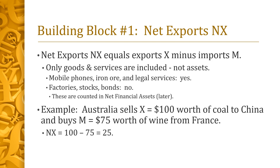To see how NX is computed, suppose Australia sells X equals $100 worth of coal to China, and buys M equals $75 worth of wine from France. NX then equals 25 — Australia's exports of 100 minus its imports of 75.